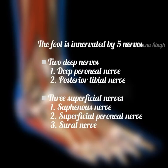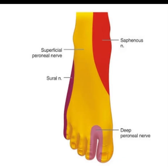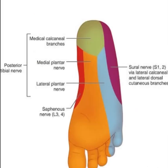Except the saphenous nerve, all of these provide sensory innervation, while the two deep nerves also provide motor supply to the foot. The superficial peroneal nerve supplies the dorsum of the foot, except the first web space, which is supplied by the deep peroneal nerve. The sole of the foot is supplied by the posterior tibial nerve, with the saphenous and sural nerves providing sensation to the medial and lateral sides of the foot respectively.